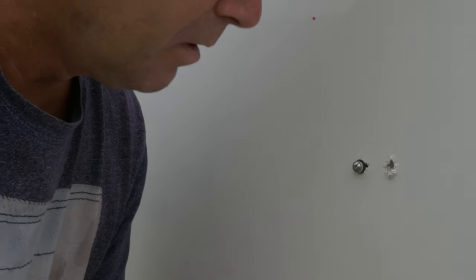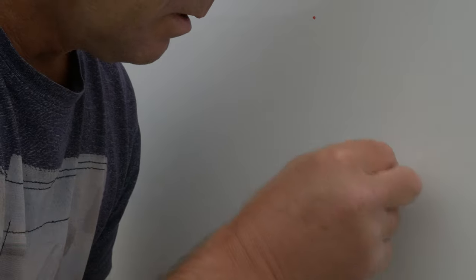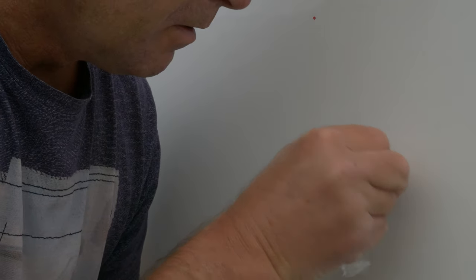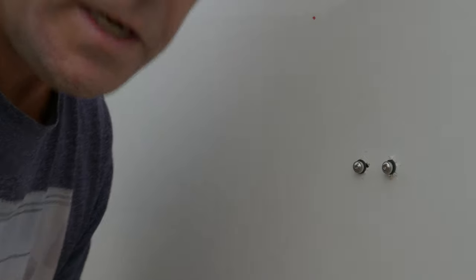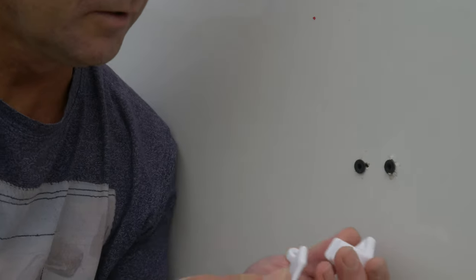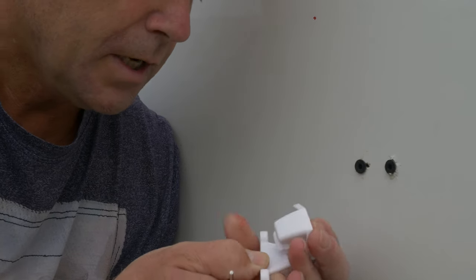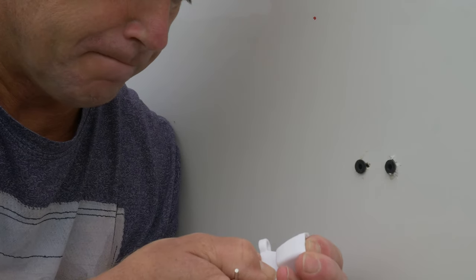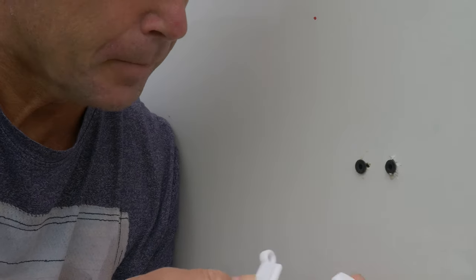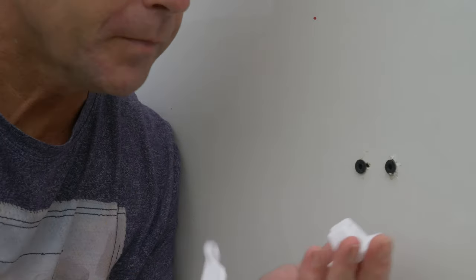So you can see the well nuts there fit in nice and snugly. And here's your new catchers, easily obtained on eBay a couple of pounds a pair. So you've got your male and your female.